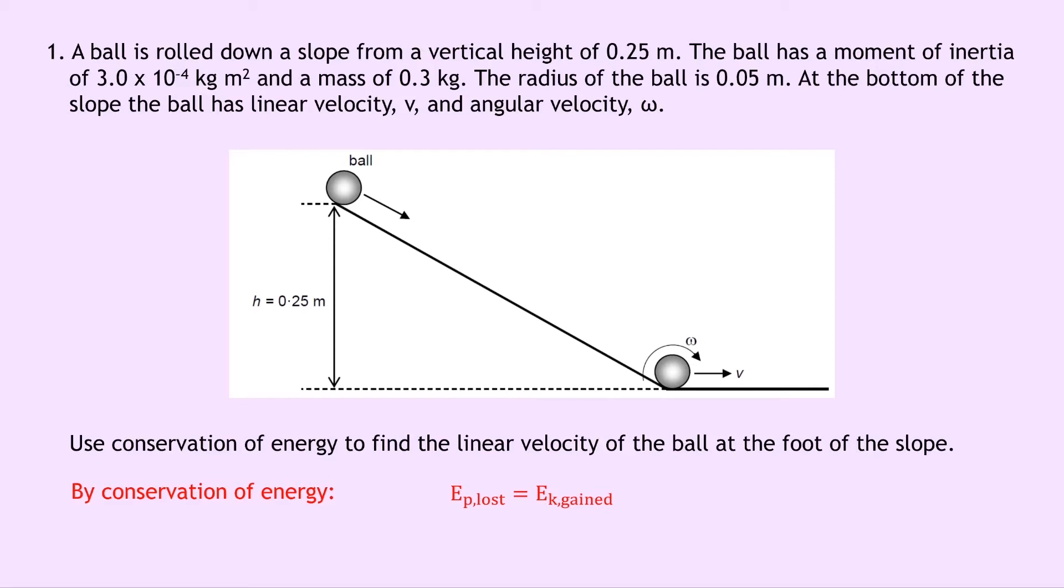So we can replace these expressions with their equations. So we have mgh is equal to half mv squared plus a half I omega squared, where a half mv squared is for your linear motion of the ball and the half I omega squared is for your rotational motion of the ball. Putting in the numbers now from the question, we have 0.3 times 9.8 times 0.25, which was our height there.